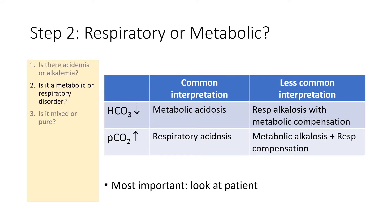Step two: is it respiratory or metabolic? Understanding the primary acid-base disorder is very important. If the bicarbonate is low, the more common interpretation is that there is a primary metabolic acidosis; it is less common to have a respiratory alkalosis with a concomitant metabolic compensation. If the pCO2 is high, the more common interpretation is a respiratory acidosis, while metabolic alkalosis is much less common. The most important thing is to look at the patient to determine if there is an underlying respiratory or metabolic disorder.